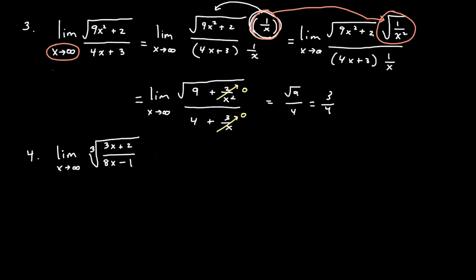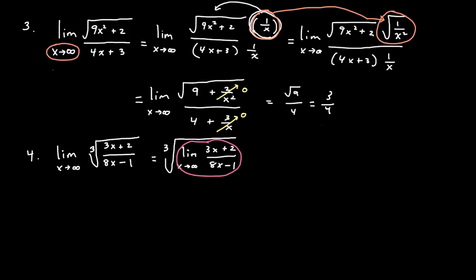This next example gets into the nuance of notation. I want you to have a limit of polynomial over polynomial, but currently it's not in that state. So I'm going to rewrite this as the cube root of the expression, employ the limit to the functional part. When it is polynomial over polynomial, I can utilize the theorem that says same degree and so on. This gives three-eighths inside the radicand, so we have the cube root of three over two.